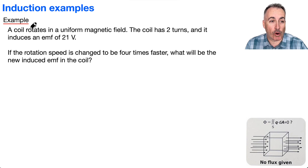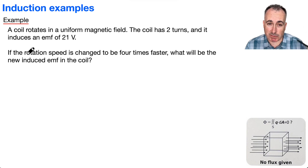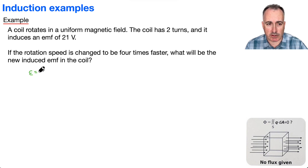We've got a coil and it rotates in a uniform magnetic field, and this coil has two turns, and it induces an EMF of 21 volts. Now the question is, if we increase the rotation speed — in fact four times faster — what will be the new induced EMF in the coil? I think it helps to remember Faraday's Law,